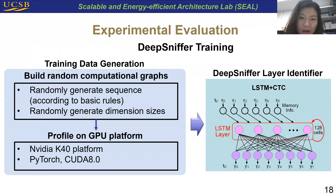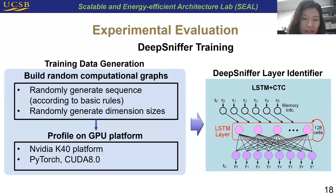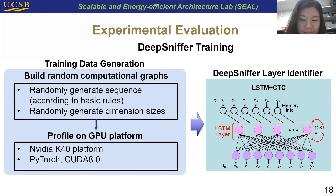Now I will introduce the experiment evaluation. To train DeepSniper, we first generate training data by building random computational graphs — randomly generating the sequence and randomly generating the dimension sizes. We put these computational graphs on the GPU platform and profile them to obtain architecture hints. Based on the obtained data, we conduct the DeepSniper layer identifier training.